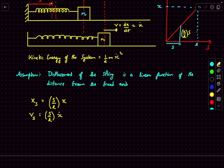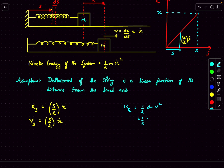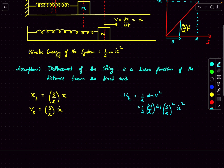Now we write the kinetic energy contribution due to this small ds element. The elementary kinetic energy is ½ dm·v². The mass dm of the ds part is the mass per unit length of the spring — that's M/L (where L is the natural length) — multiplied by ds. This is multiplied by the velocity at s squared, which is (s/L)²·ẋ².